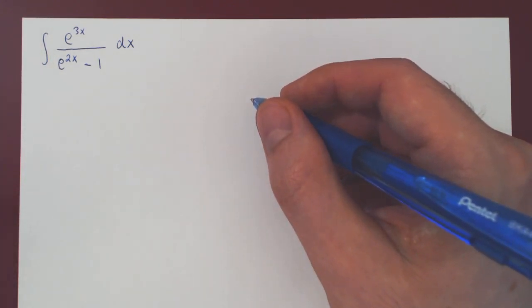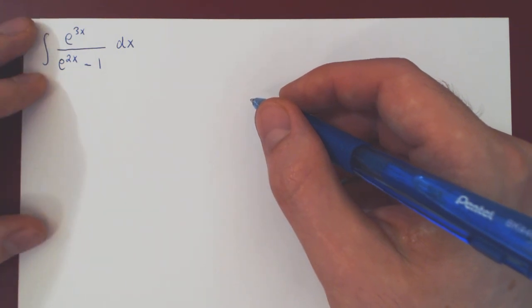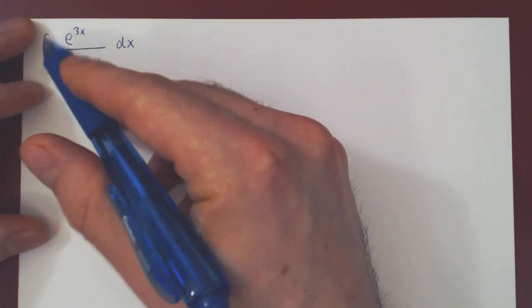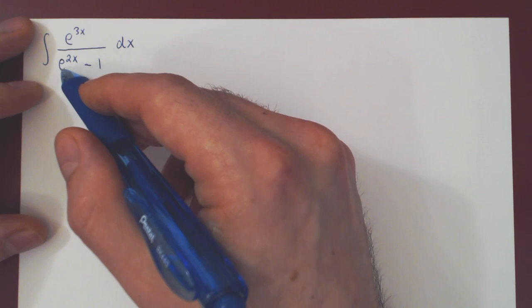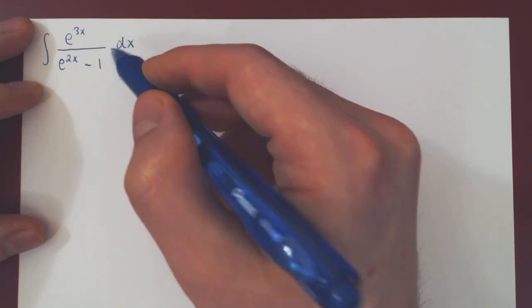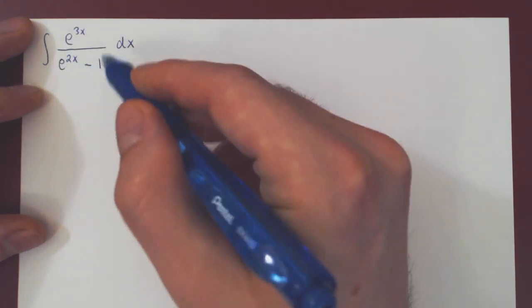Okay, so in this video, we will find the following integral: the integral of e to the 3x over e to the 2x minus 1 with respect to x. And it may not be clear how to attack this problem.